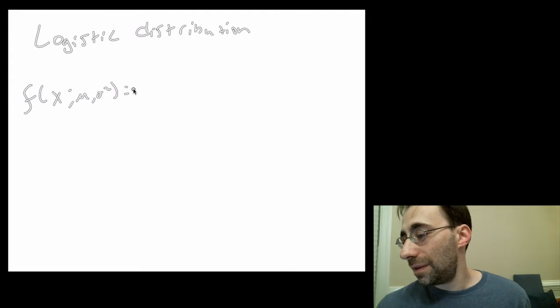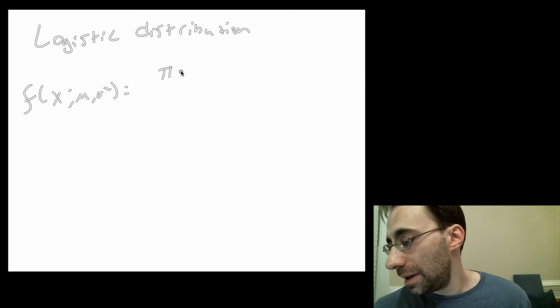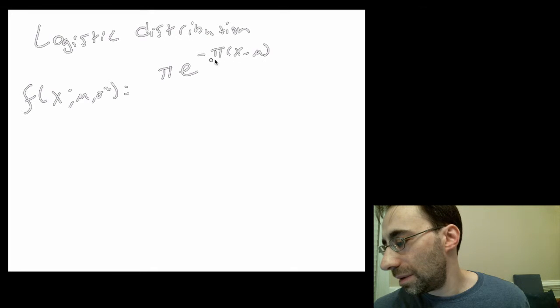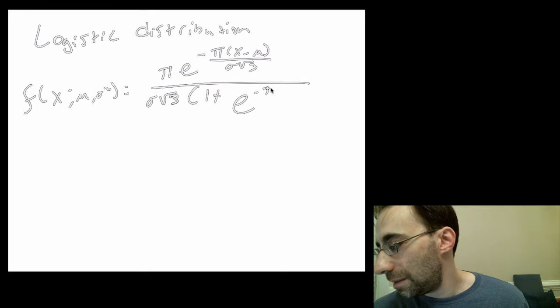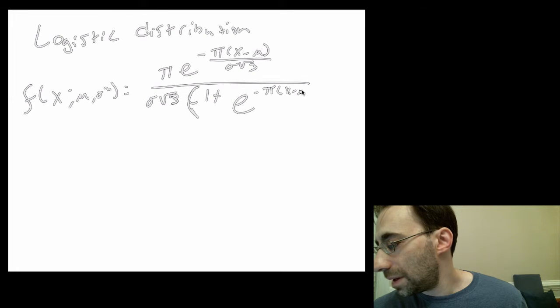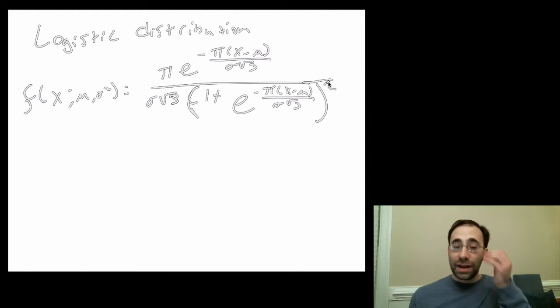The PDF looks like this: (π e^(-π(x-μ)/(σ√3))) / (σ√3 × (1 + e^(-π(x-μ)/(σ√3)))²). That is unattractive.